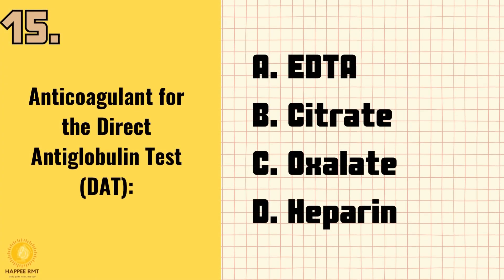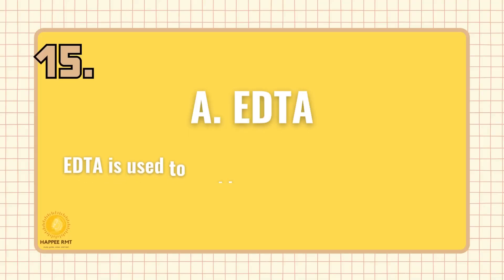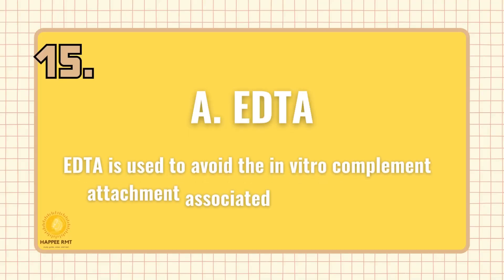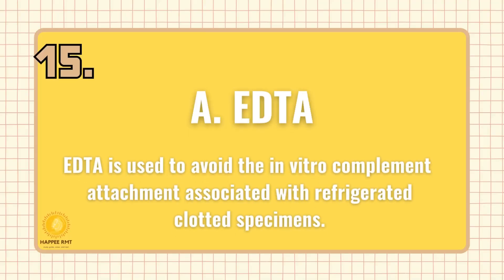Number 15. Anticoagulant for the direct antiglobulin test (DAT) is: A. EDTA. B. Citrate. C. Oxalate. D. Heparin. Answer is A: EDTA. EDTA is used to avoid the in vitro complement attachment associated with refrigerated clotted specimens.